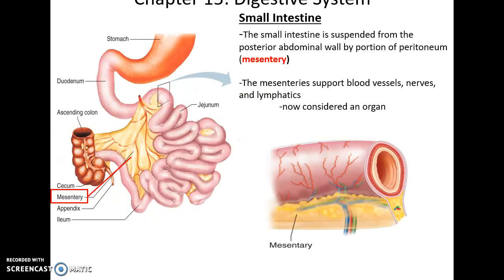The small intestine is suspended from the posterior abdominal wall by part of the peritoneum called the mesentery. You can see here, it connects to all of the small intestine. The mesentery has blood vessels and nerves and lymphatic vessels that all go into and from the small intestine.